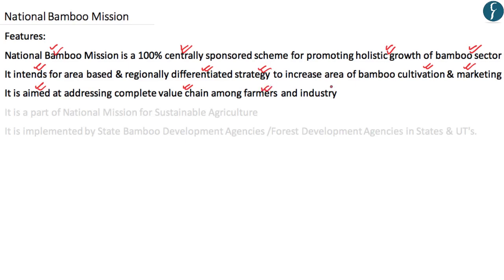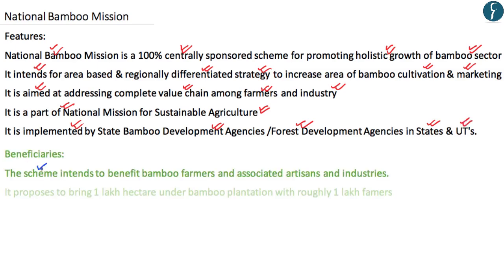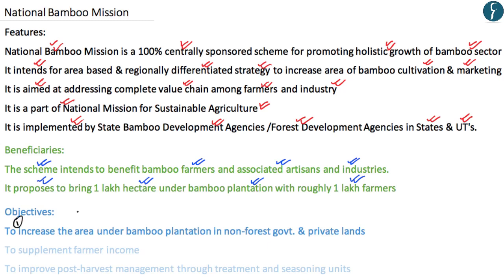The National Bamboo Mission is part of the National Mission for Sustainable Agriculture and is implemented by state bamboo development agencies or forest development agencies within their respective states or union territories. The scheme intends to benefit bamboo farmers, associated artisans, and bamboo industries. It proposes to bring 1 lakh hectares under bamboo plantation, benefiting roughly 1 lakh farmers. The first objective is to increase area under bamboo plantation in non-forest government and private lands.